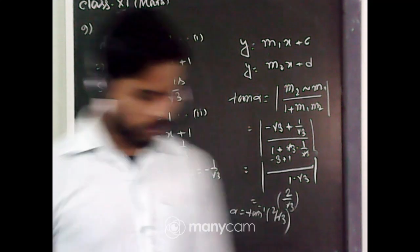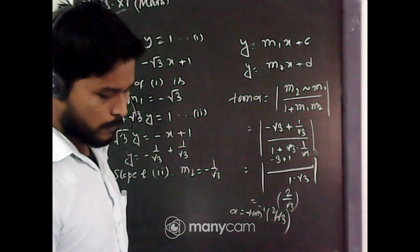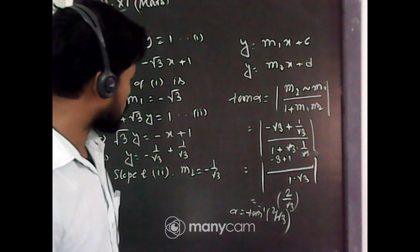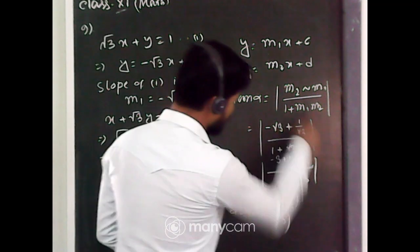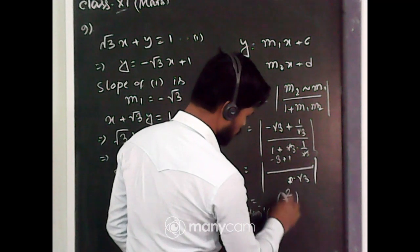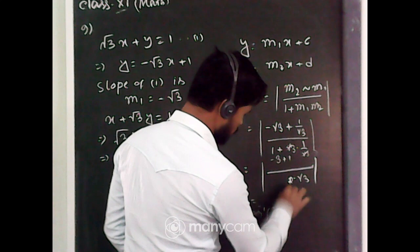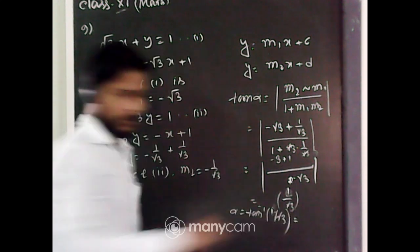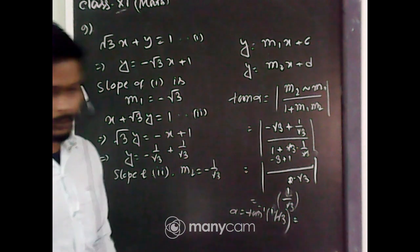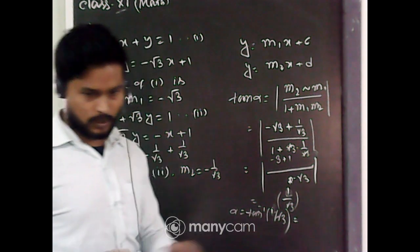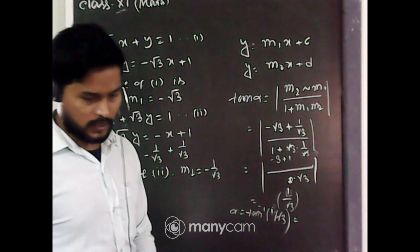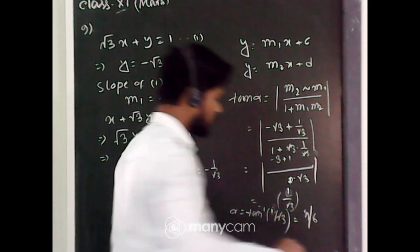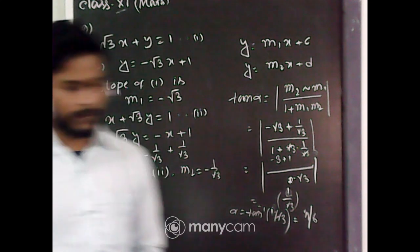Sorry, I made a mistake — the denominator is 2, giving tan α = 1/√3. Since tan 30° = 1/√3, we have α = 30° = π/6. So the value of α is π/6.